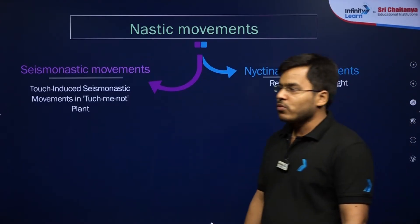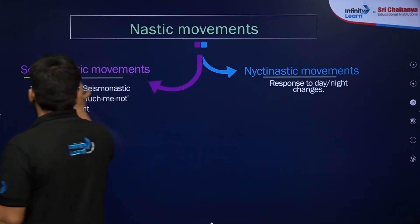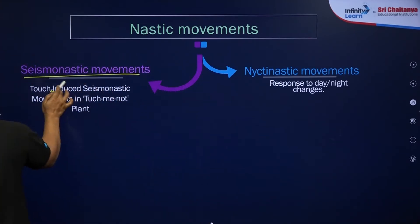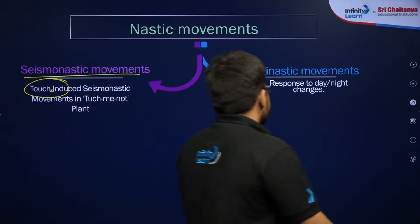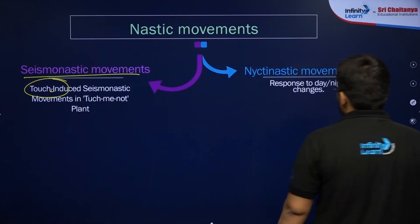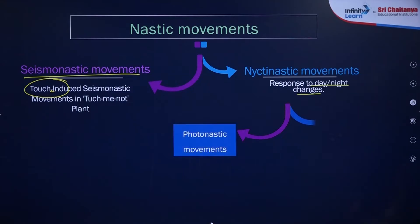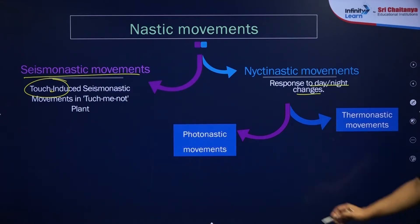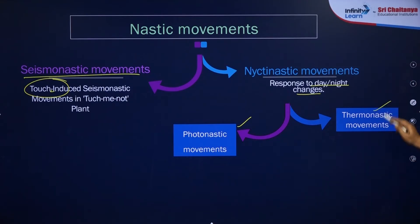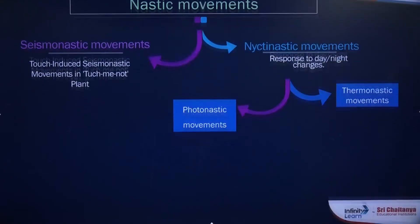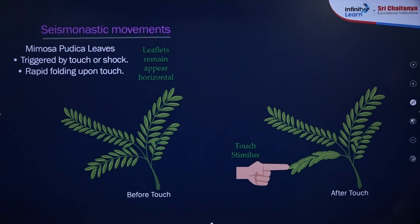Nastic movements can be of two types: seismonastic movements, which are influenced by touch, and nictinastic movements, which are influenced by day and night changes. Nictinastic movements can be further of two types: photonastic, depending on light, and thermonastic, depending on temperature.